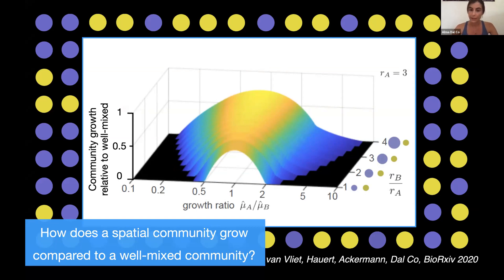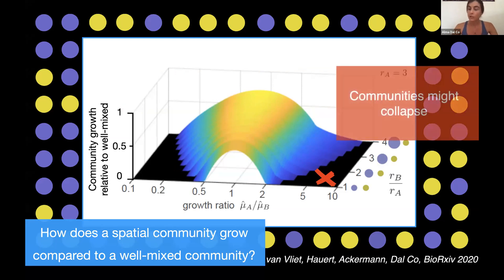we found some interesting things that certain communities where the interaction range is small and the difference in growth rates is very high might not exist in spatial systems. So some communities might collapse if they have very different growth rates and interact locally. So I invite you to check out our bioRxiv paper if you want to read more about this.